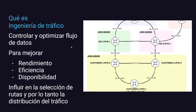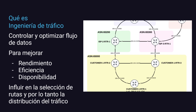¿Qué es ingeniería de tráfico? Es principalmente tener una administración para poder controlar y administrar el flujo de datos en nuestras redes. ¿Por qué quisiéramos meter mano en el flujo de datos? Para mejorar rendimiento, eficacia y disponibilidad. ¿Cómo vamos a influir? Principalmente mediante la selección de rutas que estamos distribuyendo a través de BGP, para influenciar la distribución del tráfico según nosotros queremos que se efectúe.